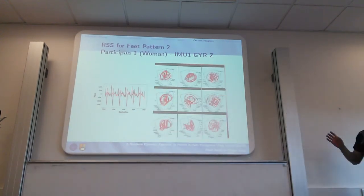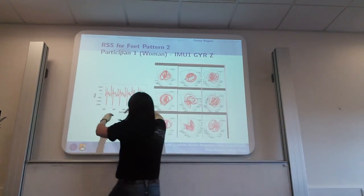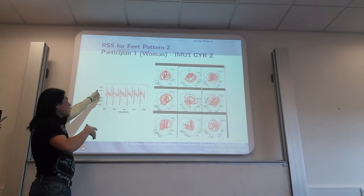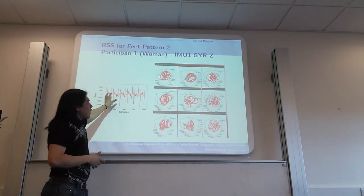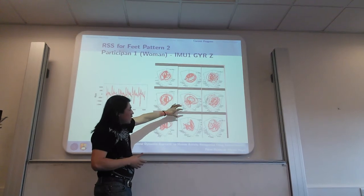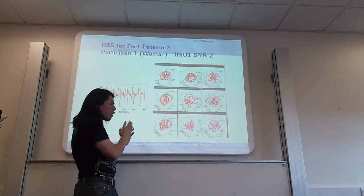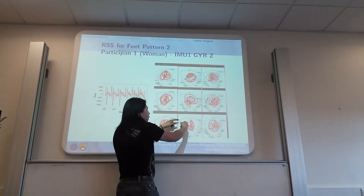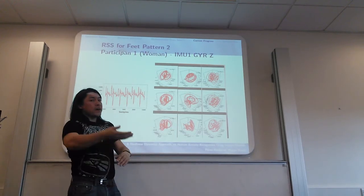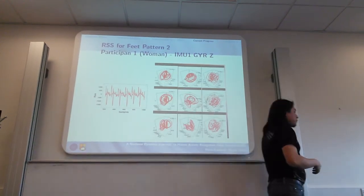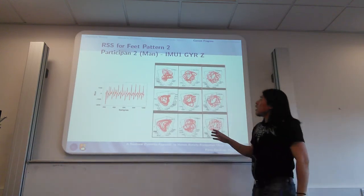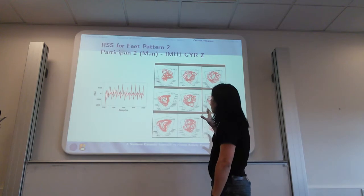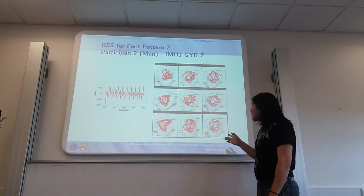This is another participant, and as you can see the time series looks cyclical or periodic, but in the state space it looks more random. There is no real formation compared to the other participant. This is another one for the same pattern in the same axis.